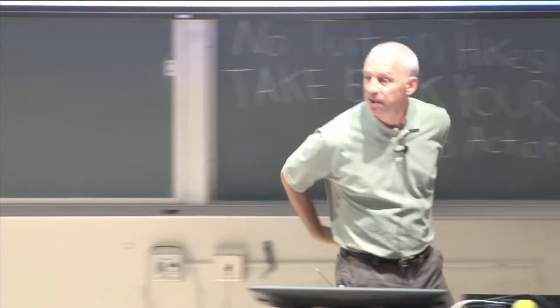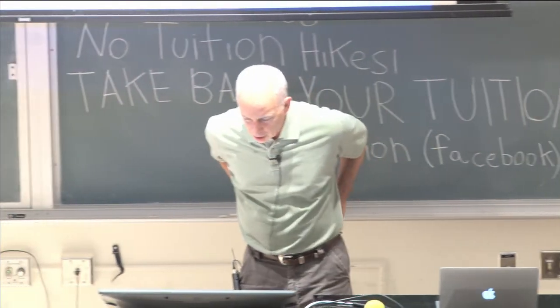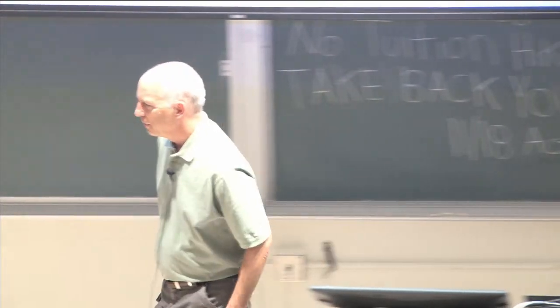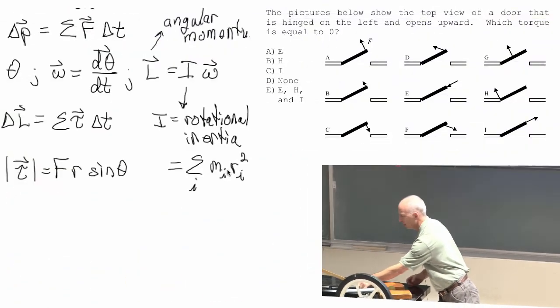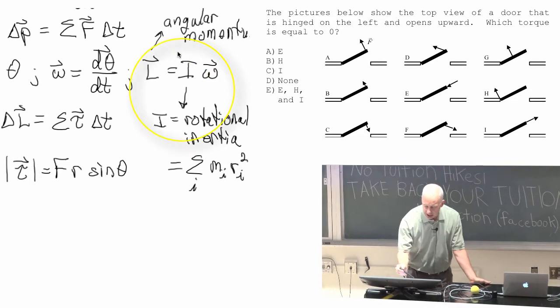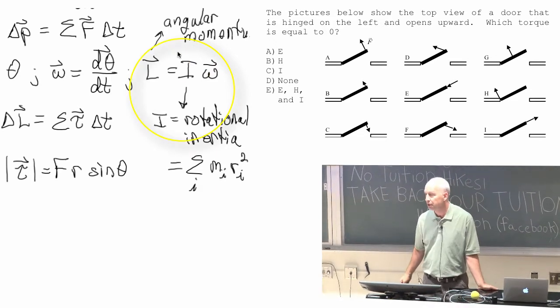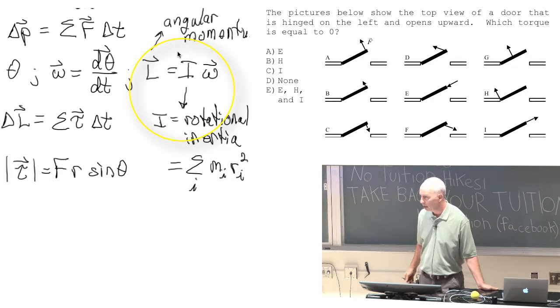So would the angular momentum be different at different points if the angular velocity is the same? That's exactly right. If they have the same angular velocity, then the angular momentum of the one with the large rotational inertia will be much larger.